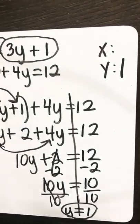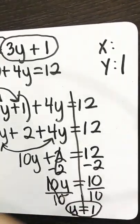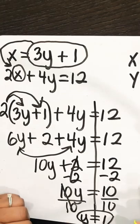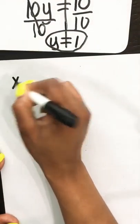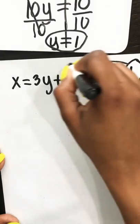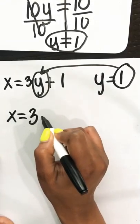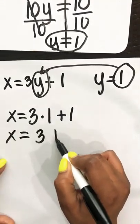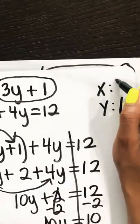Now we want to use our equation and what we know to find x. Going back to our original equation, x equals 3y plus 1. We can find x because we know y equals 1. So substituting: x equals 3 times 1 plus 1. 3 times 1 is 3, and 3 plus 1 is 4. So x equals 4.